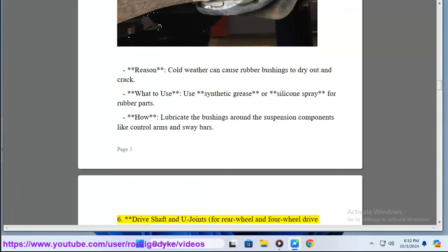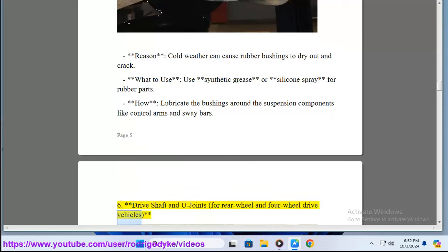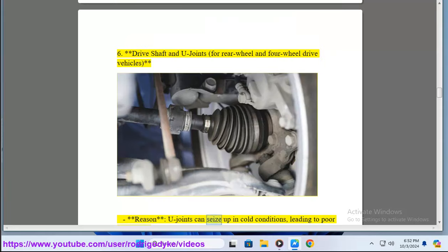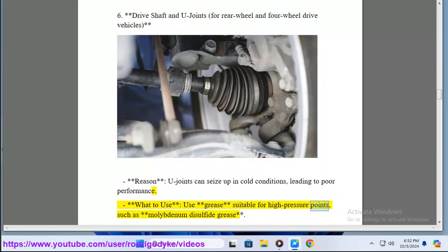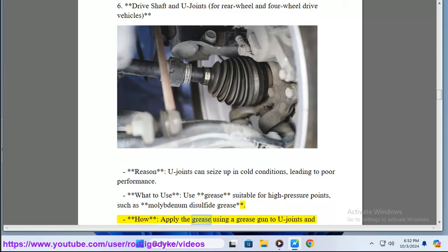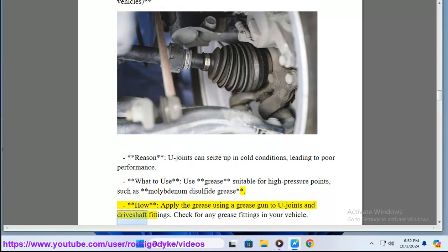6. Drive Shaft and U-Joints. For rear wheel and four wheel drive vehicles, U-joints can seize up in cold conditions, leading to poor performance. What to use? Use grease suitable for high pressure points, such as molybdenum disulfide grease. How? Apply the grease using a grease gun to U-joints and drive shaft fittings. Check for any grease fittings in your vehicle.